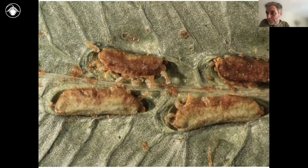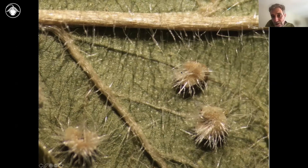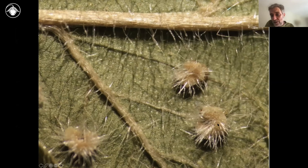Here is another cluster of sporangia, barely visible because it's covered by an indusium. The sorus itself is round as opposed to linear, and the indusium covering it is kidney-shaped. It also happens to be covered with long, colorless hairs. Again, that is pretty much sufficient to tell us that this is in the Dryopteridaceae, the wood fern family.